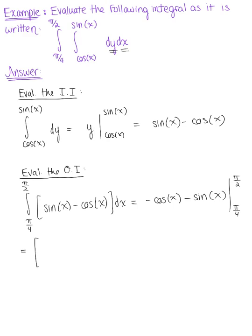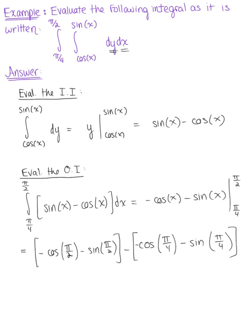Plugging our values in here, we're going to have minus cosine of pi by 2 minus sine of pi by 2, and then we are subtracting minus cosine of pi by 4 minus sine of pi over 4. So we're ready to evaluate. Cosine of pi over 2 goes to 0, so we have 0 minus 1 minus negative square root of 2 over 2 minus square root of 2 over 2.